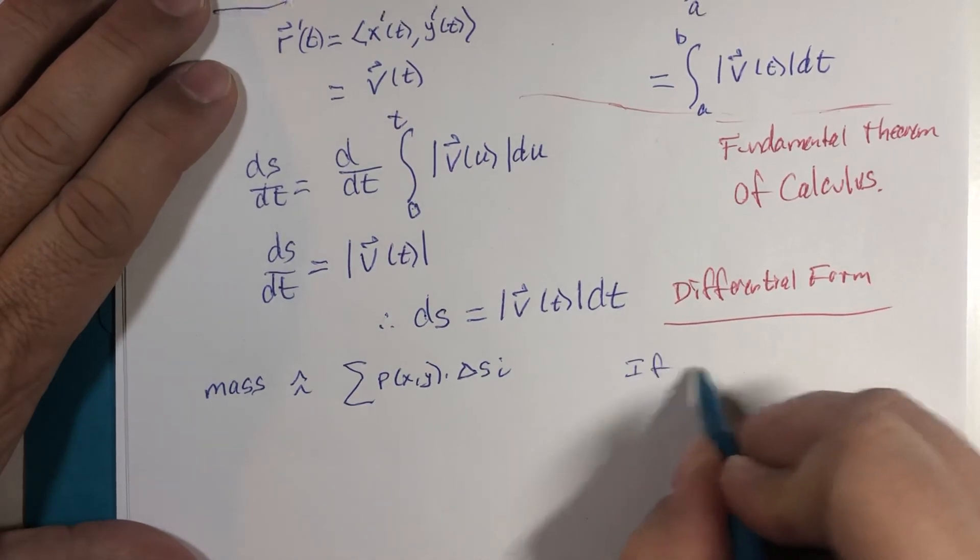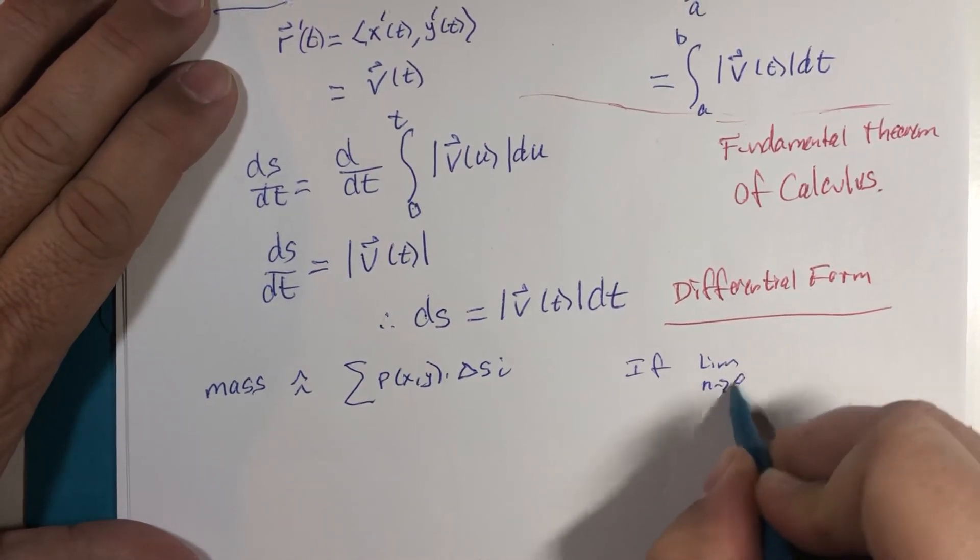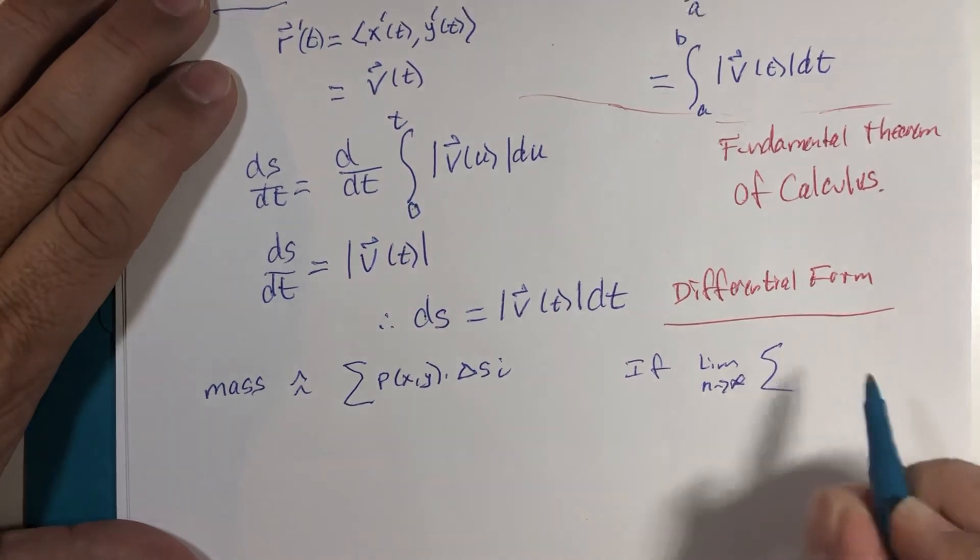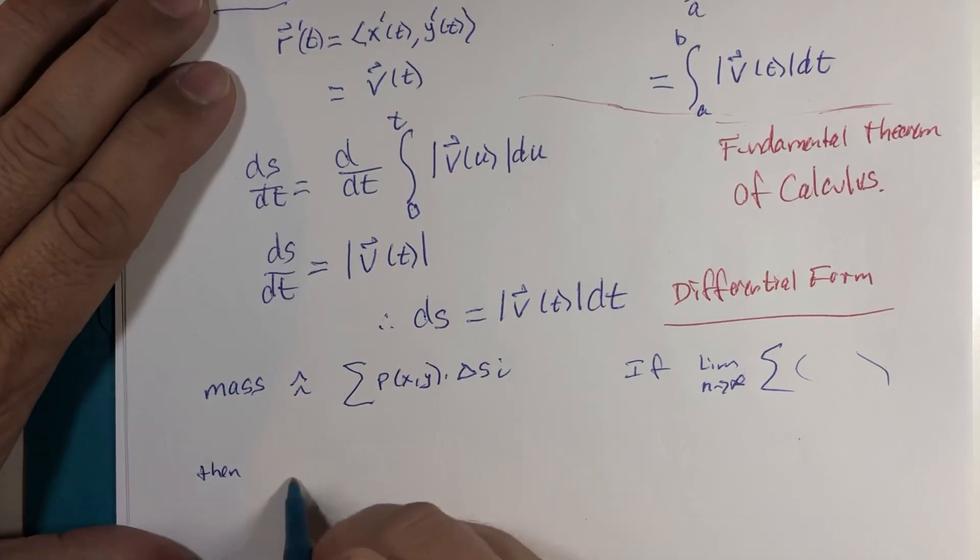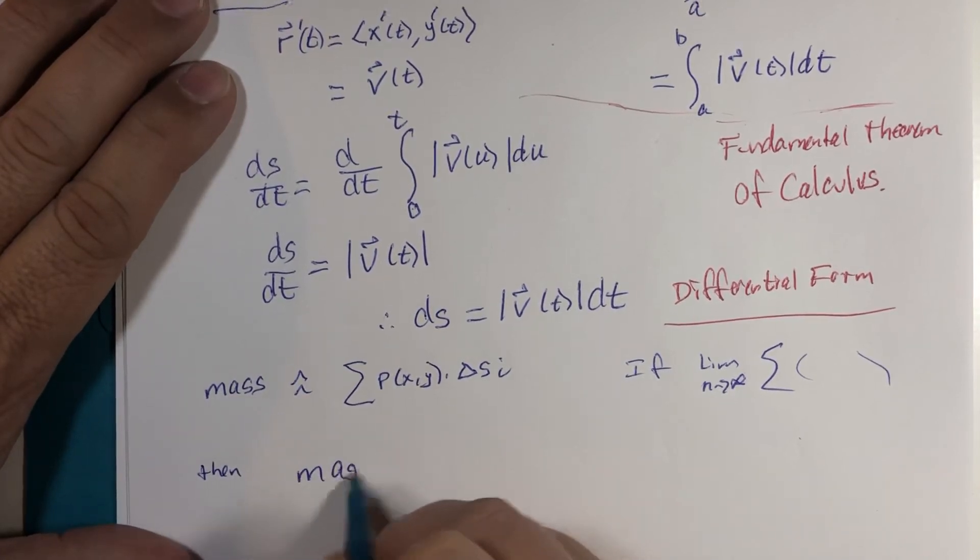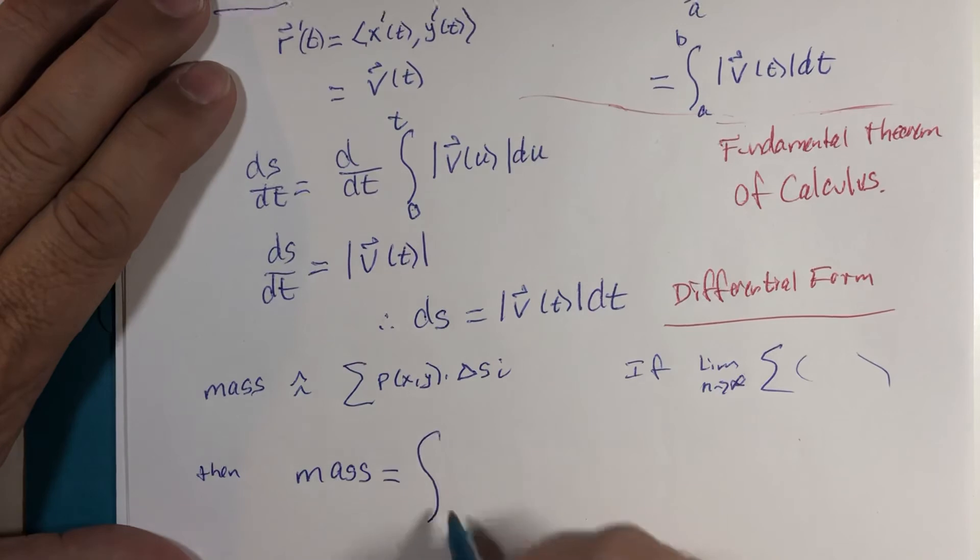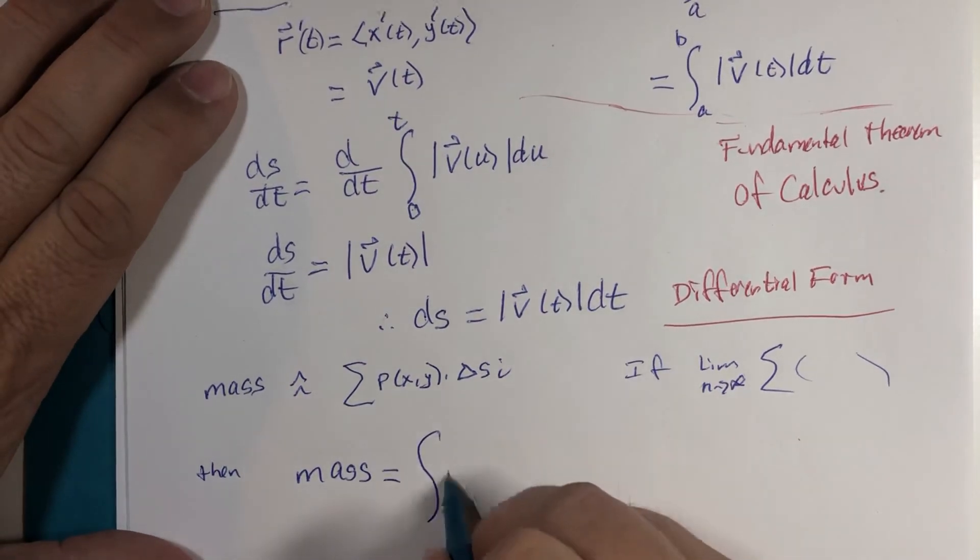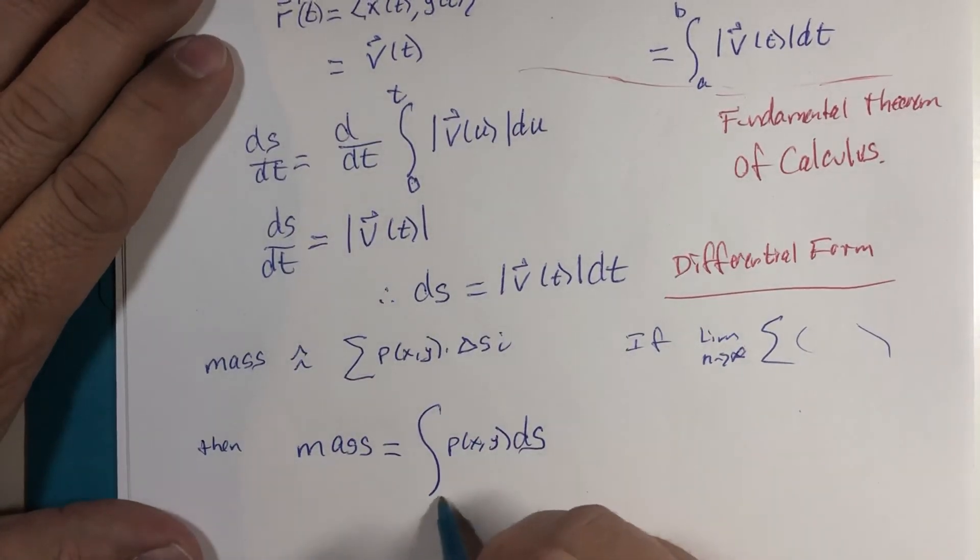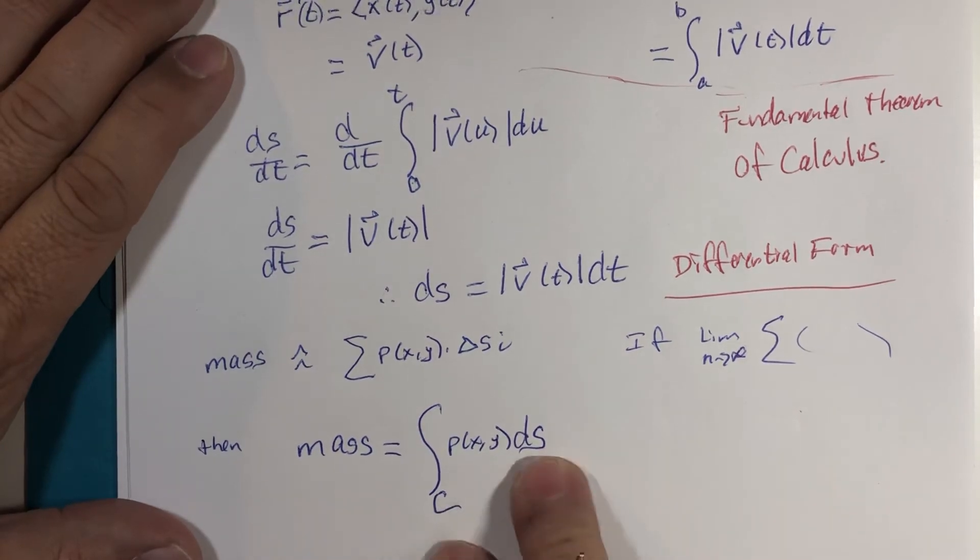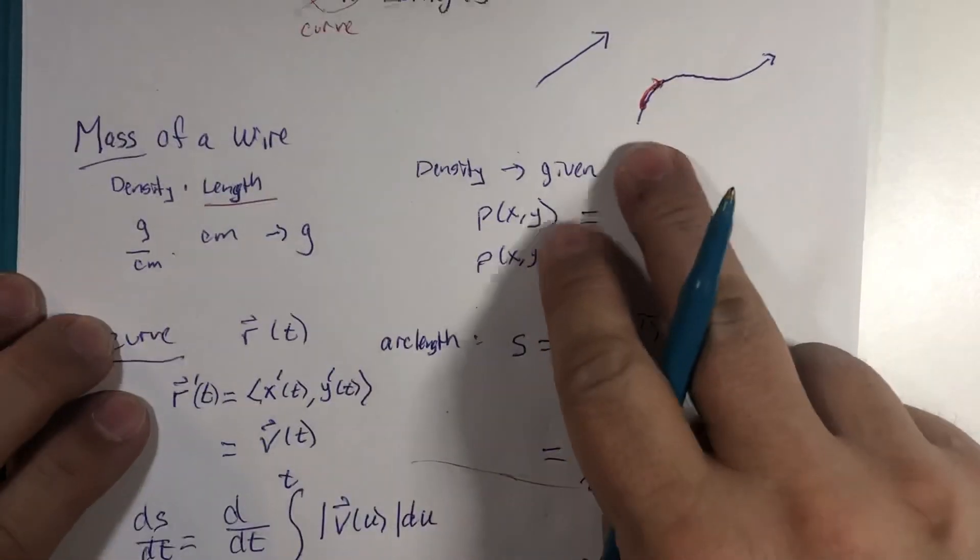If we let the limit as n goes to infinity of this sum, then that gives us the following: mass equals integral of density function ds. They use the c here with this s to refer to we're talking about these curves.